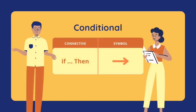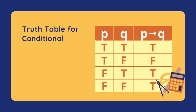For the conditional, our connective is 'if…then' and our symbol is an arrow pointing to the right. This is our truth table for the conditional. Every conditional is true except when our antecedent is true and our consequent is false — in that case, our conditional is false.